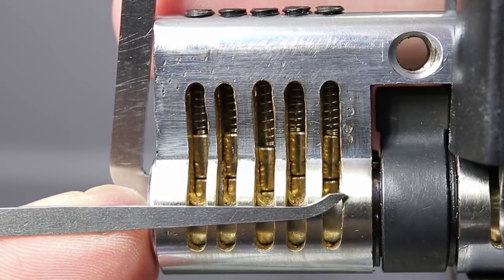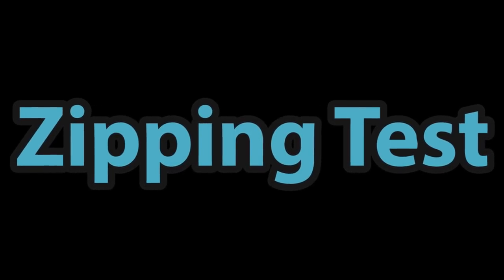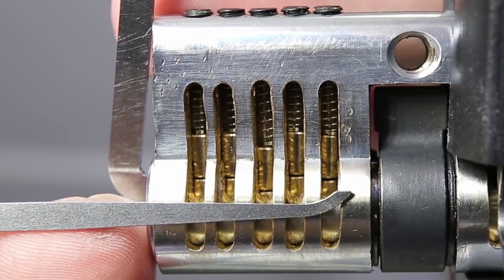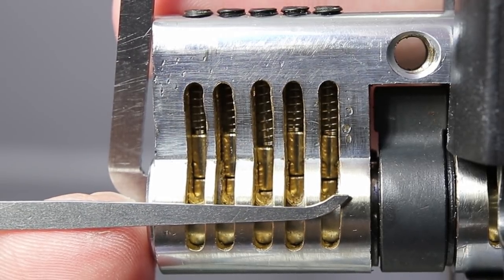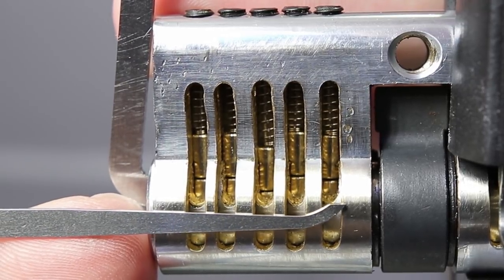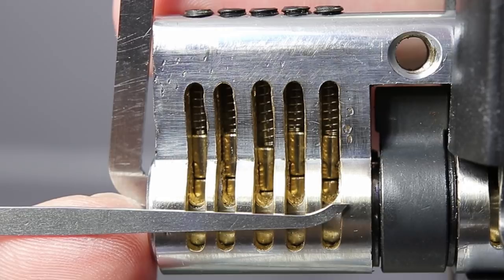So what we're going to do today is go over my zipping test. This is a test that you can utilize to help you rapidly identify the next binding pin. It does not always work, but when it does it can be quite effective. So what I'd like to do now is get right into how to utilize this test when you are single pin picking a lock.